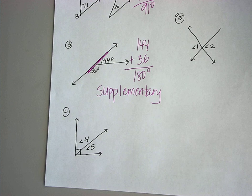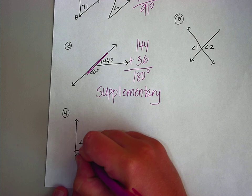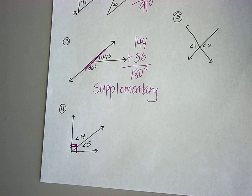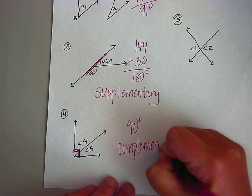Look at number four. There should be something that automatically tells you what this is. Looking at that diagram, what automatically tells you? This box automatically tells us it's a right angle. Right angles equal 90 degrees. So what equals 90? It is complementary.